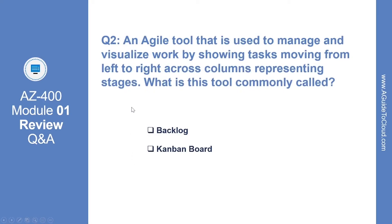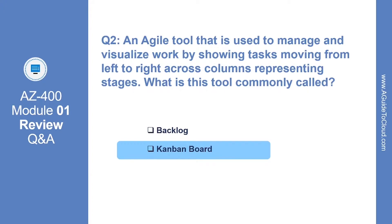Question number 2: an agile tool that is used to manage and visualize work by showing tasks moving from left to right across columns representing stages — what is this tool commonly called? The correct answer is Kanban board. A Kanban board lets you visualize the flow of work and constrain the amount of work in progress, turning your backlog into an interactive sign board providing a visual flow of work.